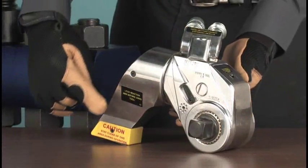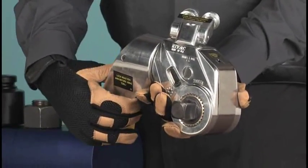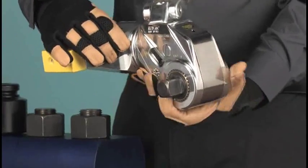This is the reaction arm which blocks against the solid surface to keep the wrench from rotating as the socket turns. It is easily adjusted with one hand to reach the blocking point.